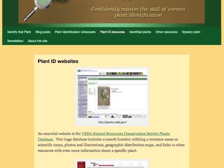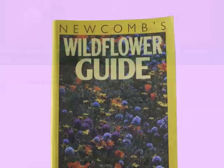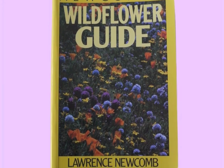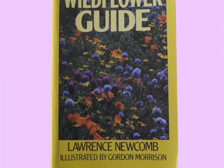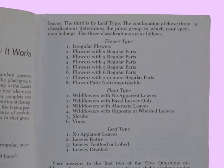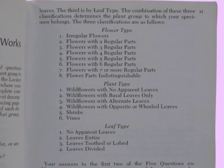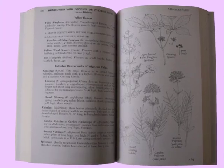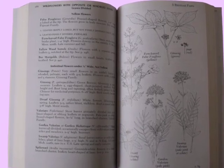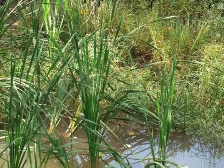Newcomb's Wildflower Guide sorts plants based on a key which asks for a determination of the type of flower, the type of plant, and the type of leaf. The combined answer to these three plant part types points you to the pages within the book where you can look through a smaller group of illustrations and descriptions to identify your unknown plant.